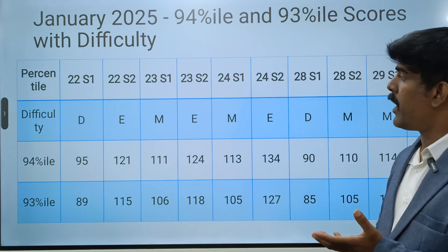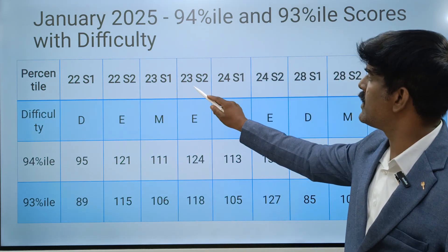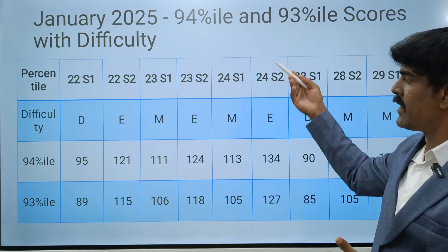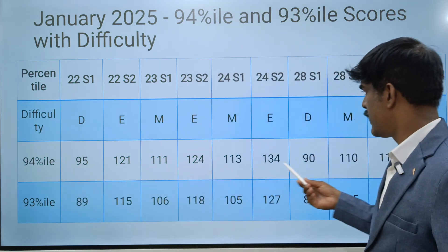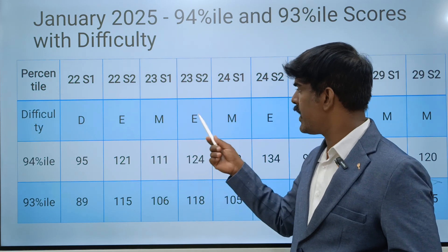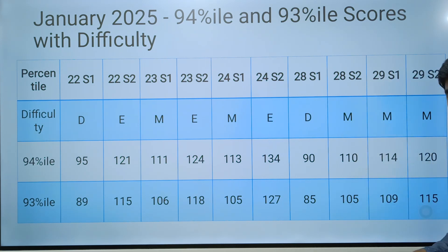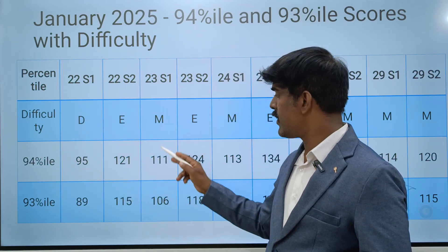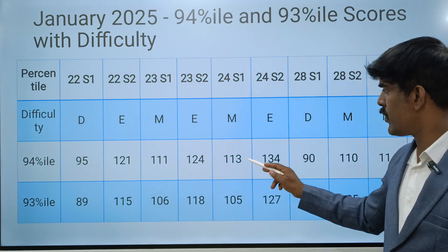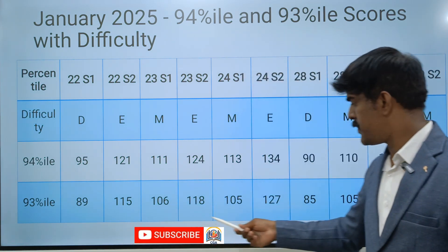For January 2025 sessions, the difficulty levels recorded were: easy, moderate, easy, moderate, easy, difficult, moderate, moderate, moderate. The marks at 94 percentile for these sessions were: 95, 121, 111, 124, 113, 134, 90, 110, 114, and 120 respectively. Similarly, for 93 percentile, the respective marks follow the same pattern. This is for the January attempt; the April attempt analysis is not yet complete.